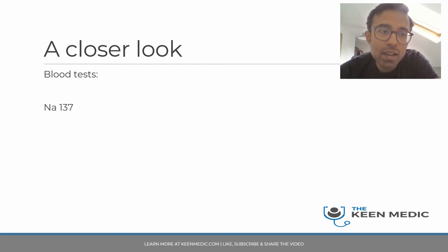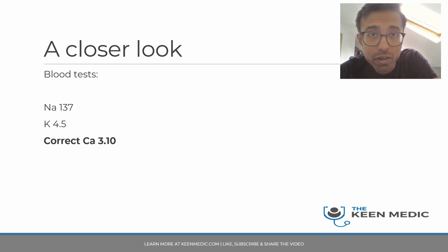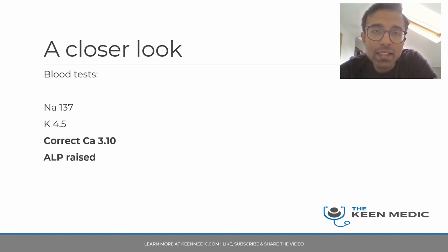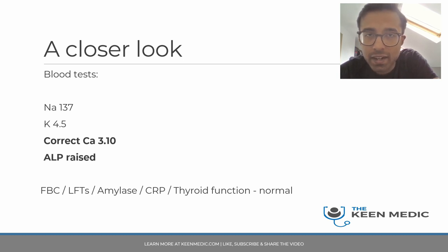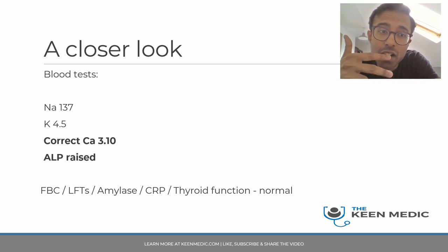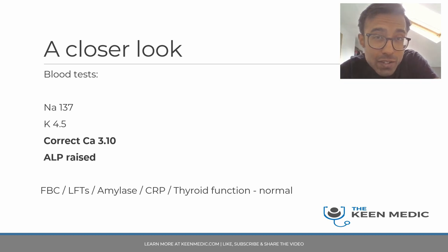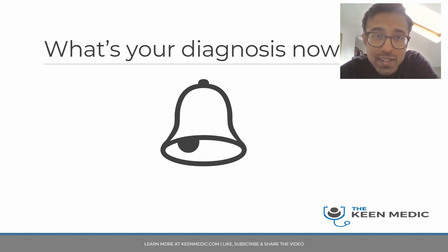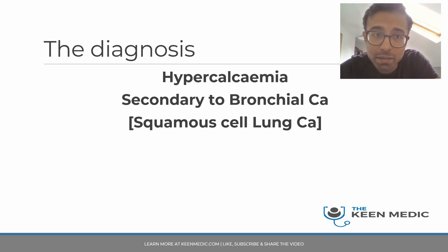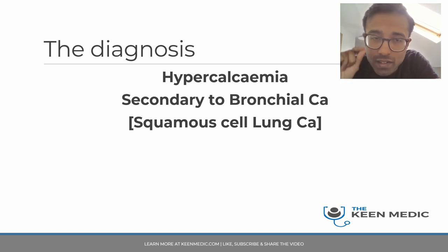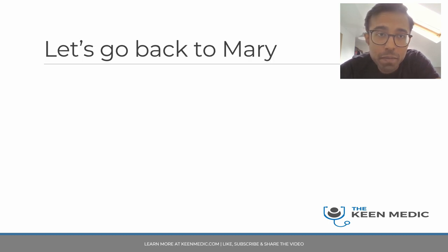Blood results: sodium 137, potassium 4.5, corrected calcium 3.1 — raised — and ALP is also raised. Everything else is essentially normal. So: raised corrected calcium, raised ALP, right upper lobe nodule on CXR, constipation, and confusion. The diagnosis is hypercalcaemia secondary to bronchial malignancy — specifically squamous cell lung carcinoma. Squamous cell is the key thing to remember here, as it causes a paraneoplastic phenomenon resulting in hypercalcaemia.